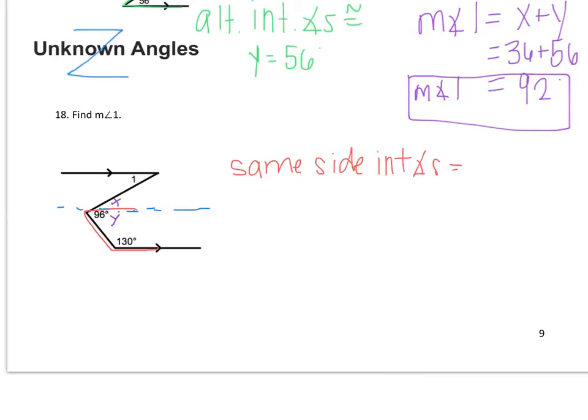And remember we just said that they add to 180. So I'm going to take Y and 130 and sum them to 180, showing me that Y is 50 degrees.